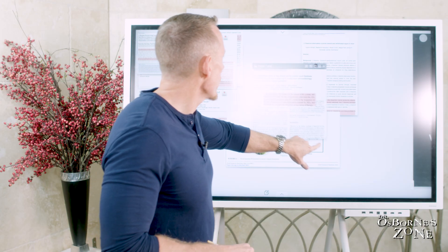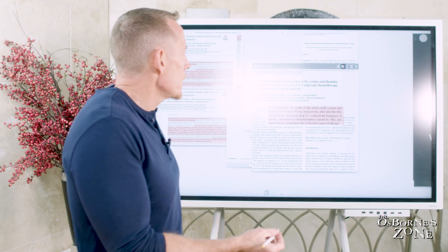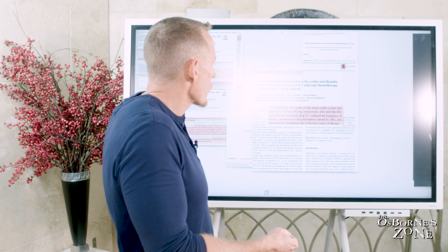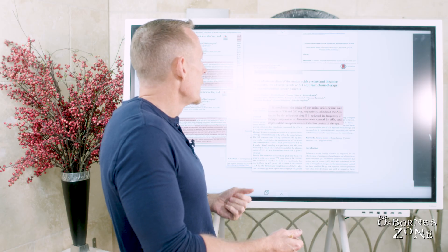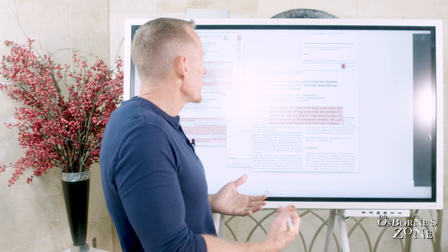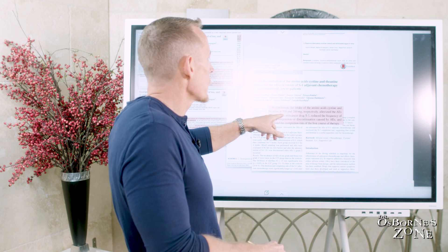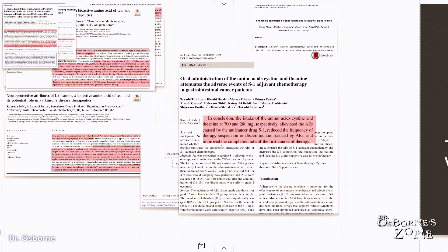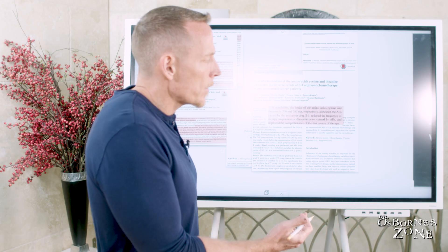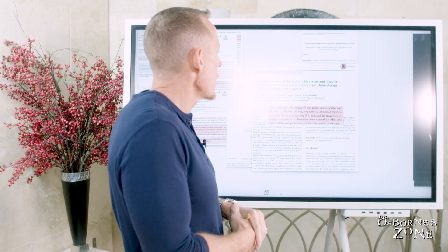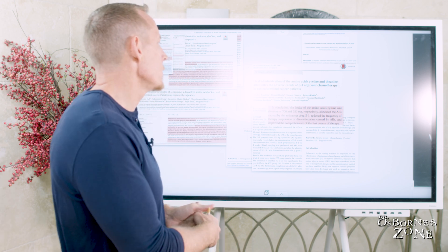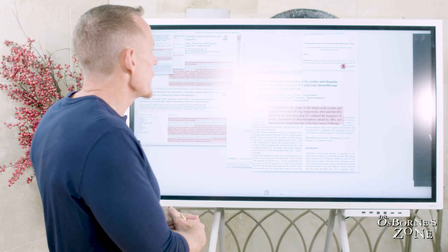Here's another study on the administration of theanine and cysteine in cancer patients. This is a human trial. What they found is that in patients receiving chemotherapy, they gave cysteine and theanine both. For cysteine, they gave 700 milligrams, and for theanine they gave 280 milligrams, which alleviated the adverse effects caused by the anti-cancer drug and reduced the frequency of therapy suspension or discontinuation caused by adverse events. A lot of times when people are going through chemotherapy, they have to stop because the side effects are so aggressively terrible. The administration of cysteine and theanine allowed those people to continue their course of therapy, but also reduced the side effects.